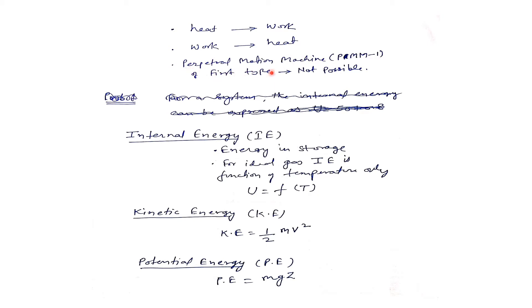This means that a perpetual motion machine of the first kind — PMM1 — is not possible, as we cannot produce work from the system without any heat input.